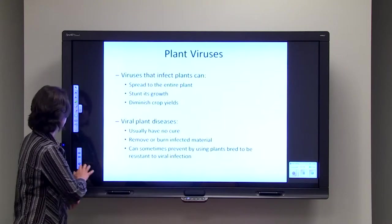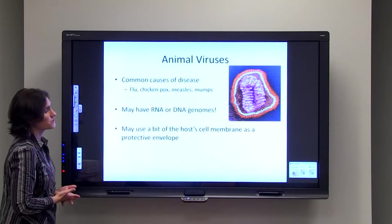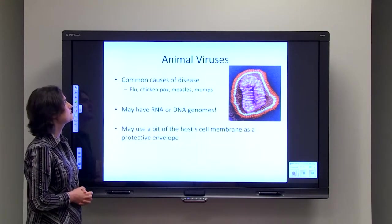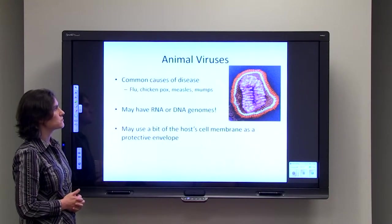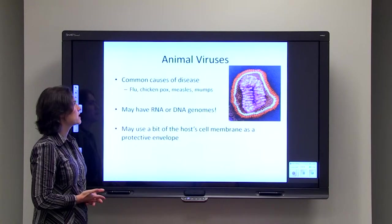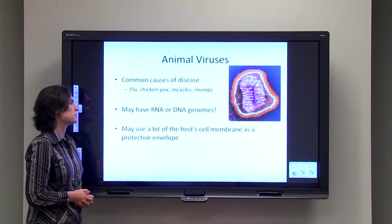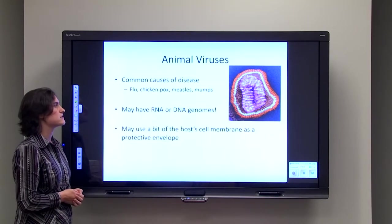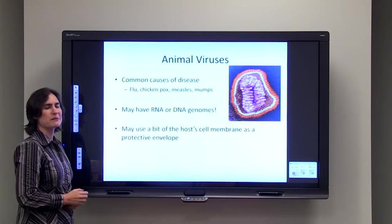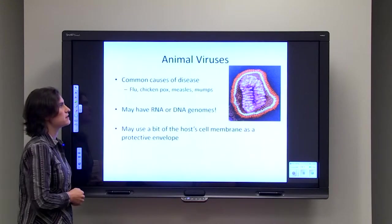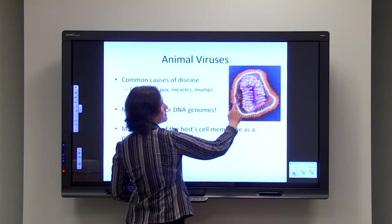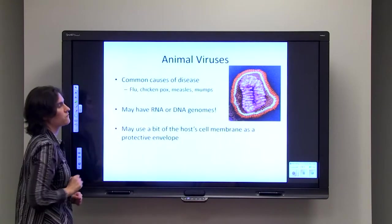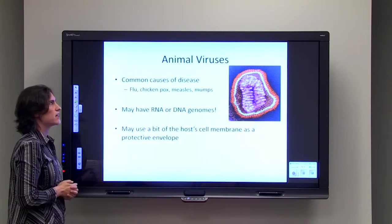There's also animal viruses. These animal viruses are a very common cause of disease in humans, such as the flu, chicken pox, measles, mumps. These animal viruses can sometimes have either an RNA or a DNA genome. Another thing that's unique about these animal viruses compared to the bacteria viruses is sometimes when they're leaving the cell, they can pick up a bit of that cellular membrane. So we've got the genome of the virus, we've got some protein coat on the outside, and then we also have a bit of the cellular membrane that we stole from the cell, which is able to protect the animal virus and make it a little bit harder to find by the immune system.